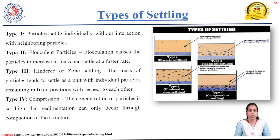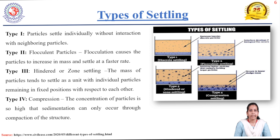Type three is hindered or zone settling, where flocs are formed and the mass of particles tends to settle as a unit, with individual particles remaining in fixed positions relative to each other. Type four is compression settling, where the concentration of particles is so high that sedimentation occurs through compaction of the structure. These are the four types of settling carried out in the settling tank.